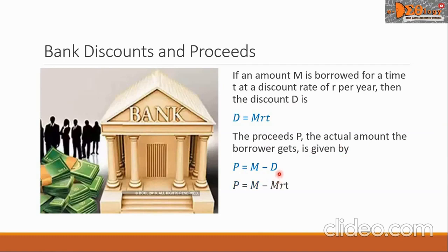Now, we know that D is equal to M times R times T. We can substitute this product for D. In the next line, D is now changed into M, R, T. So we have this new formula: P equals capital M, minus the product capital M, times R, times T.